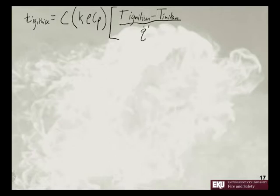This equation is equal to C times k rho Cp times our temperature ignition minus our temperature initial, which is our ambient temperature, divided by our heat flux, quantity squared.